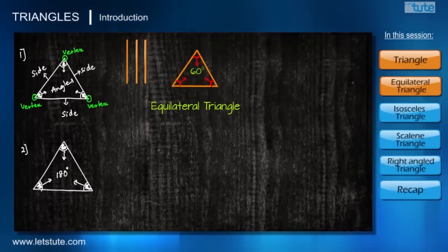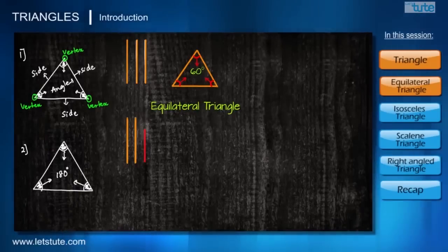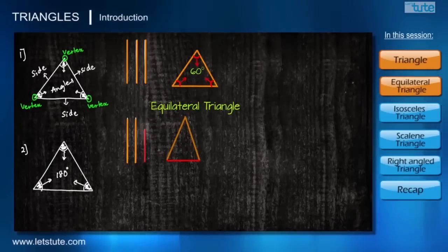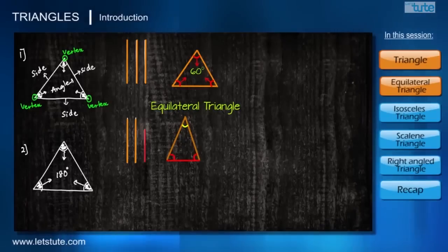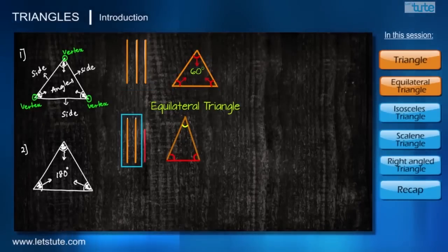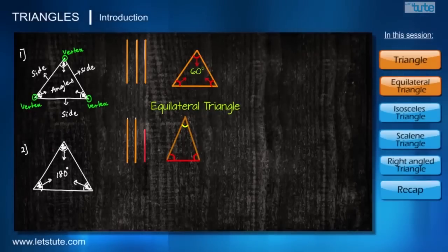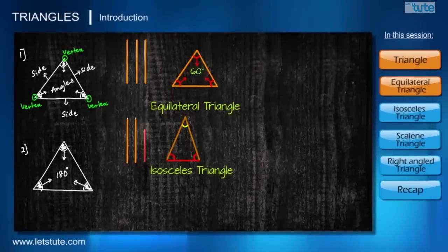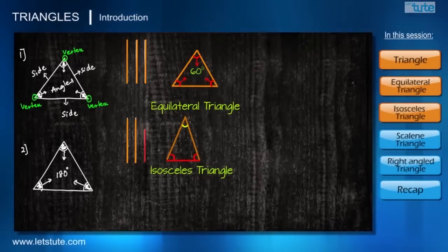Now what if we have only two equal line segments and the third one is not equal to them? When we make a triangle out of them, only two angles will be equal to each other — otherwise a triangle is not possible. Notice the relation: when we had three equal sides we got three equal angles; here with two equal sides we get two equal angles. Those two equal angles will be opposite to the equal sides. Such triangles are called isosceles triangles.